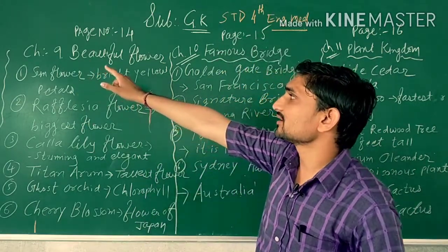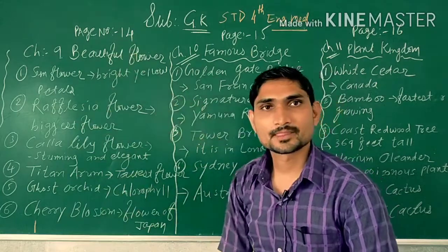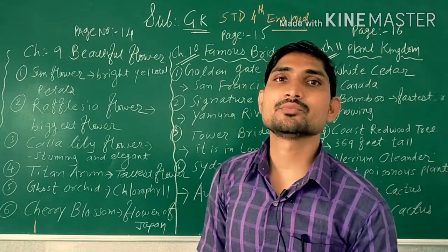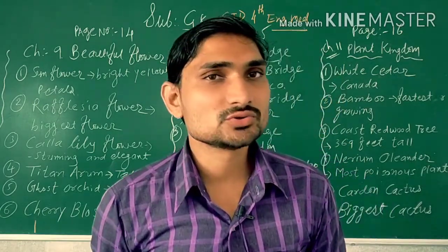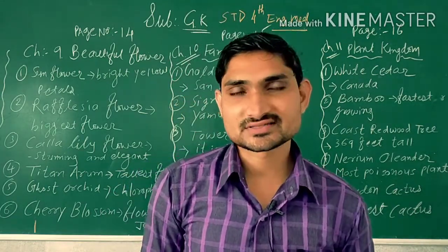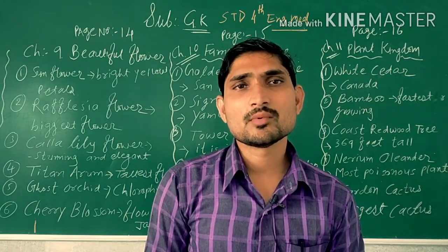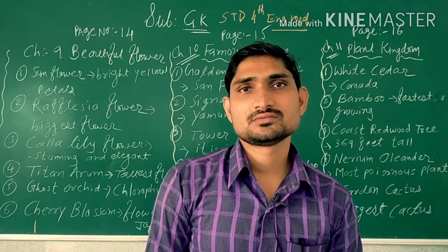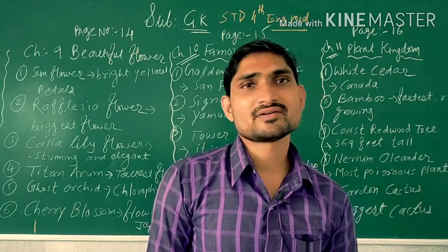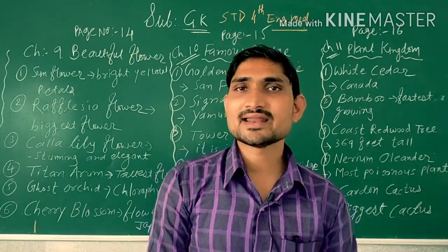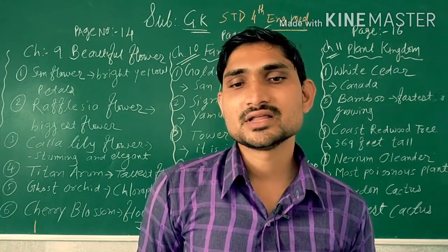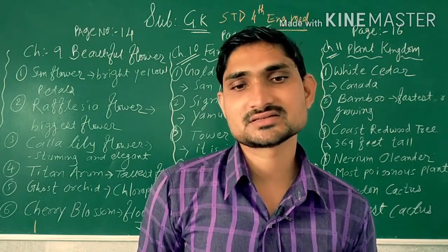Students, what is there in chapter number 9? Page number 40. Students, in page number 40, you can see chapter number 9 - Beautiful Flowers. This topic belongs to nature. Means, around us there are different types of flowers. But we know little about them. Here in this book, some flowers are related to our knowledge and some are not. So, let's go to this chapter on page number 14, Beautiful Flowers, and we will get the knowledge of different types of flowers.